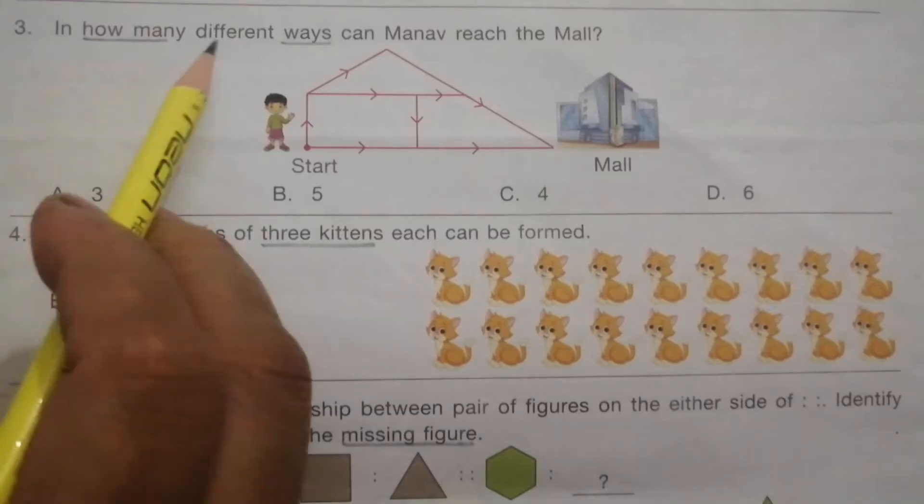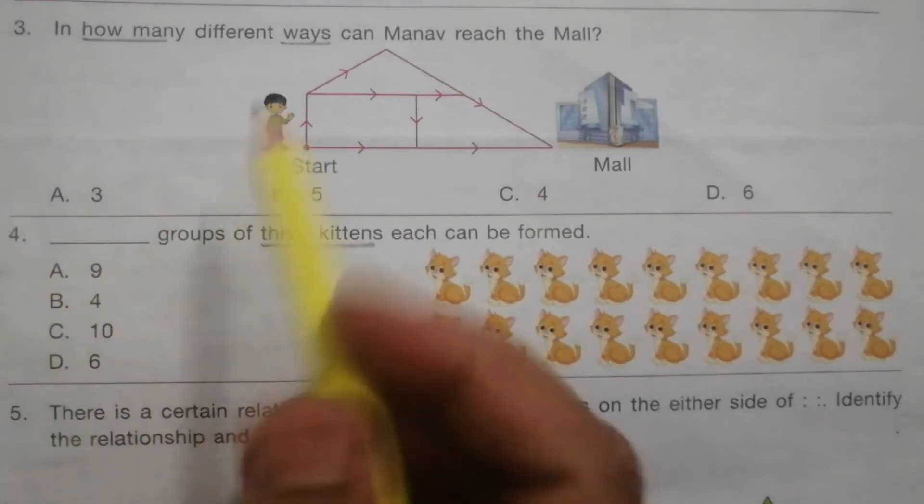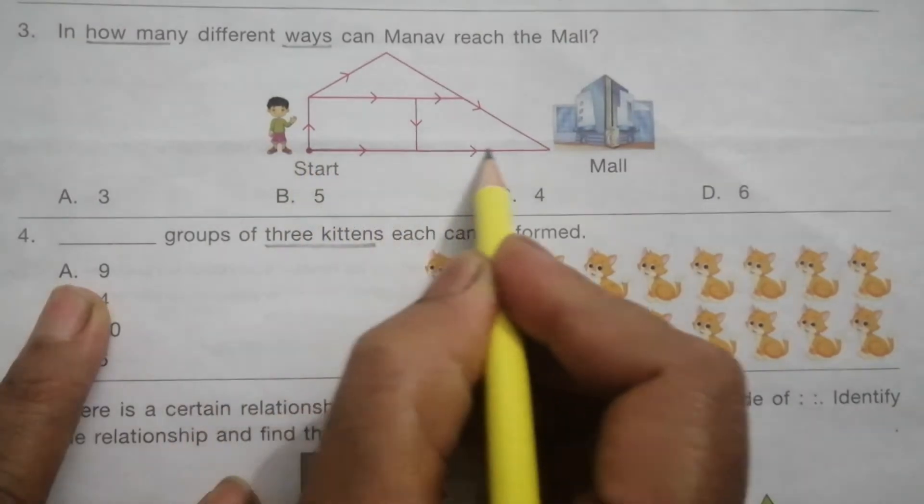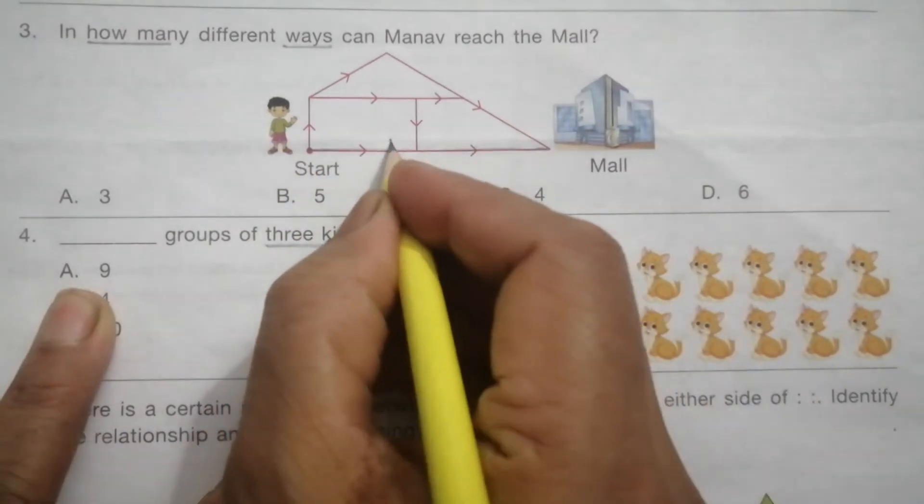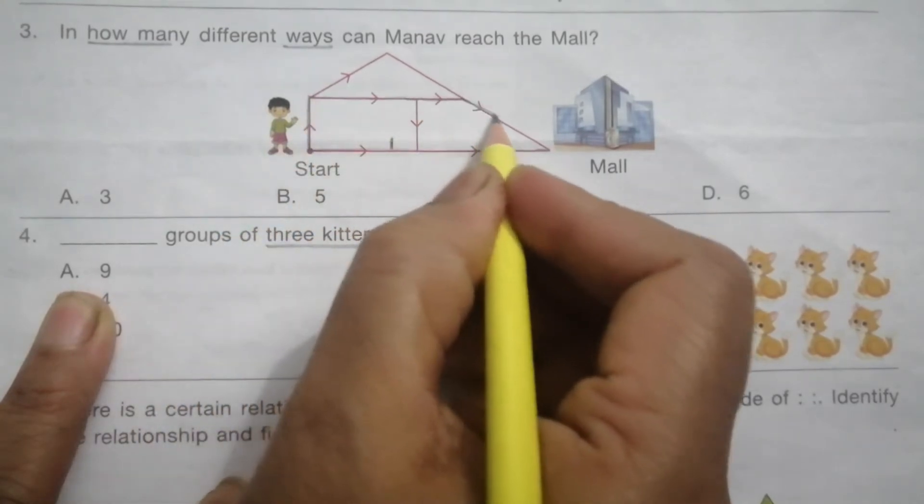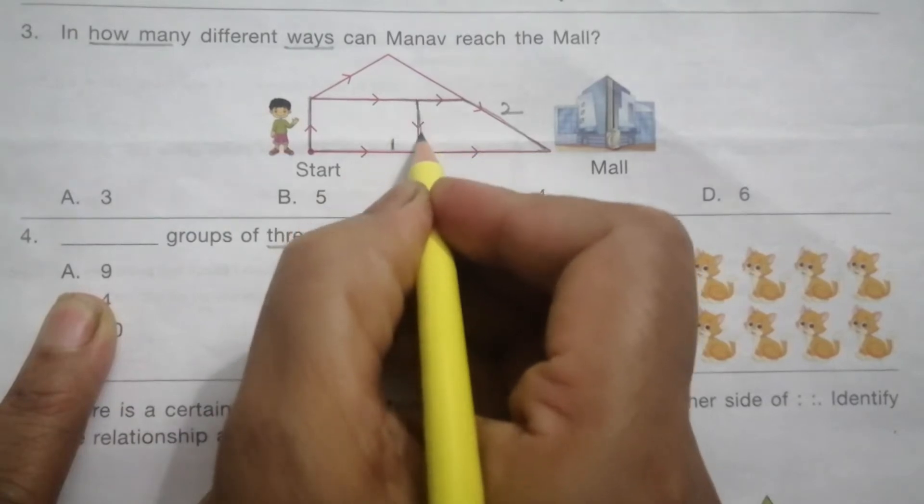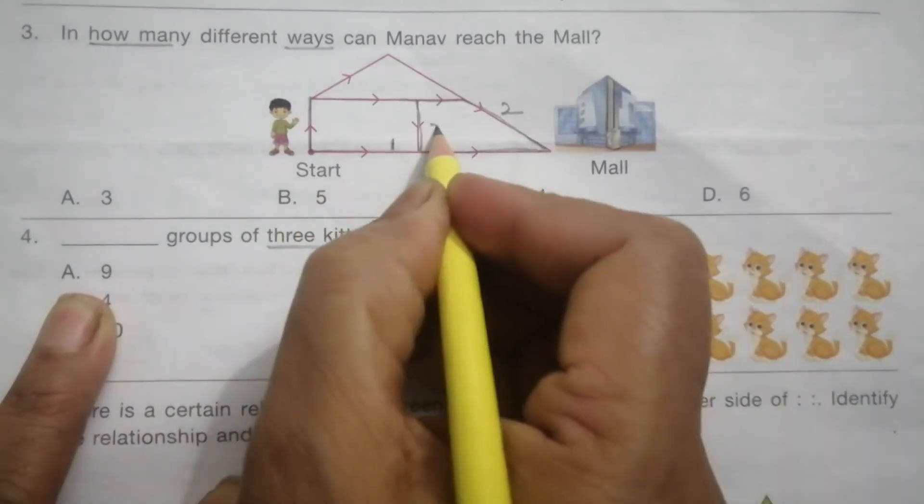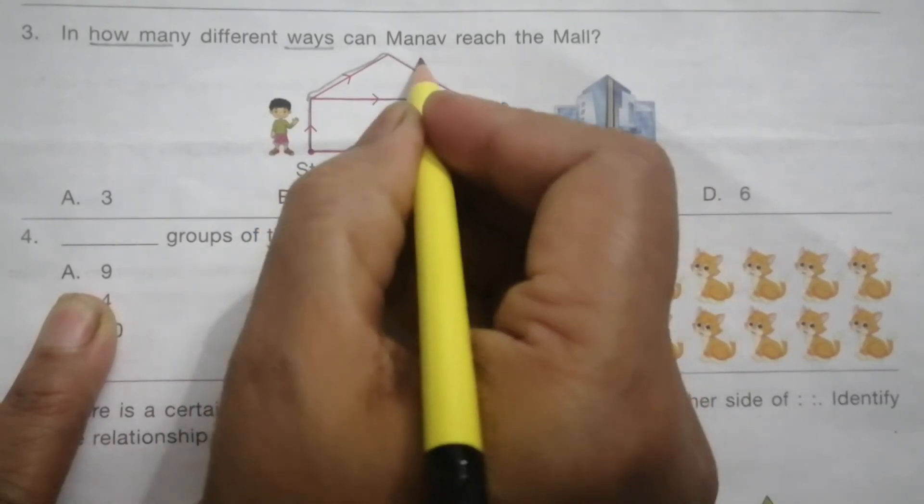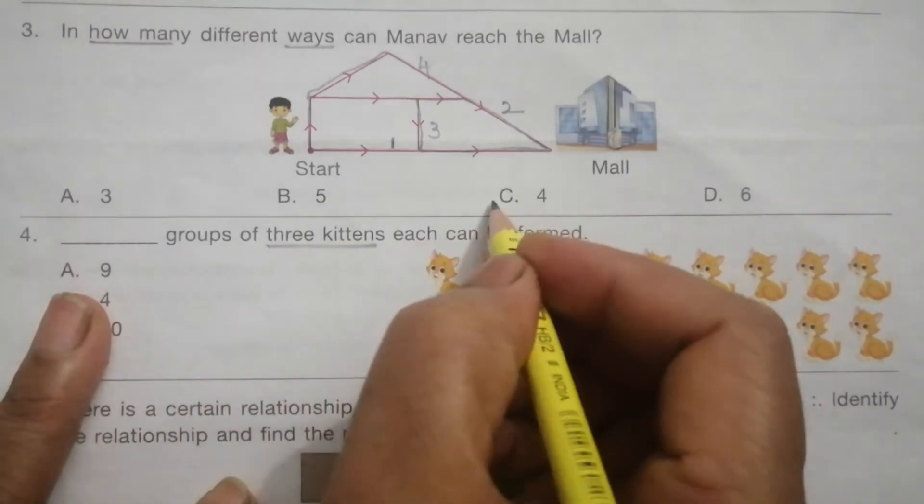Problem 3: In how many different ways can Monu reach the mat? This is the starting point. This is the first way, this is the second way, this is the third way, and this is the fourth way. So the answer is C.